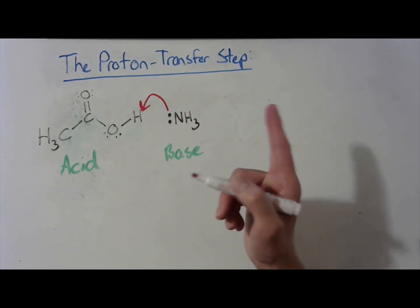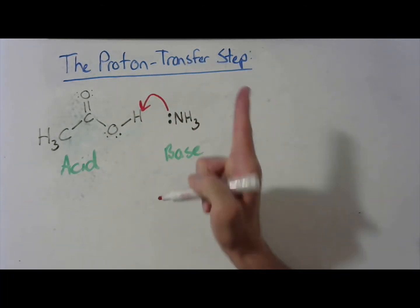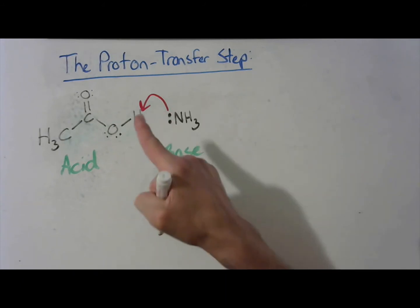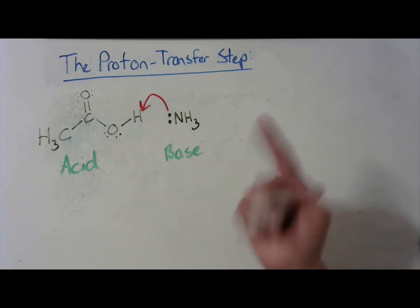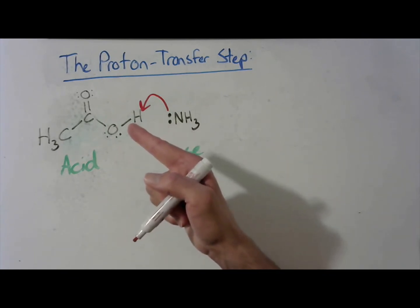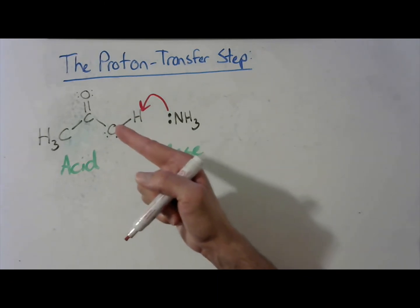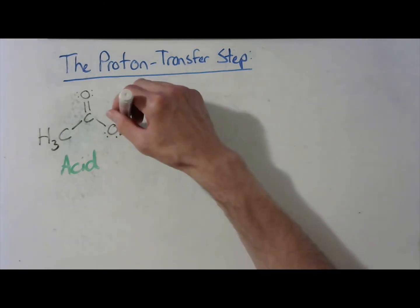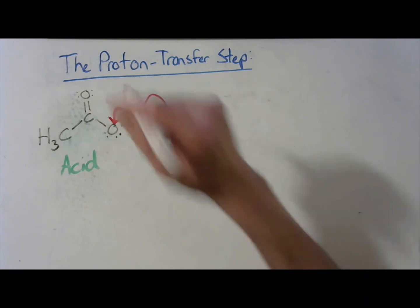Now, hydrogen can only have one covalent bond at a time. That means we have to get rid of this pre-existing covalent bond. We're going to do that with heterolysis, or by breaking that bond in a lopsided manner, such that those electrons go over to the oxygen. Like so.